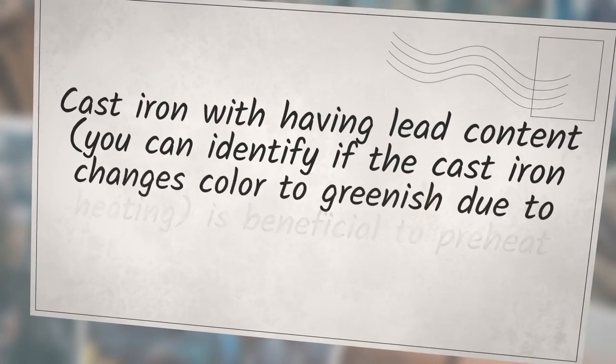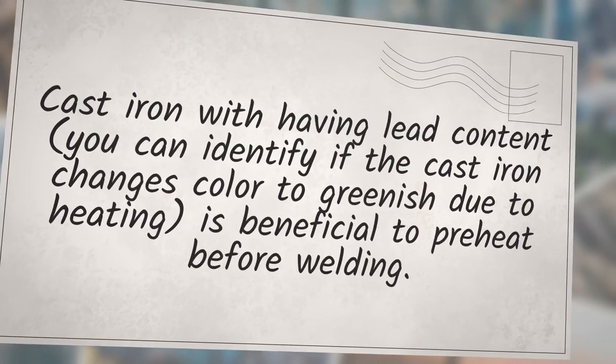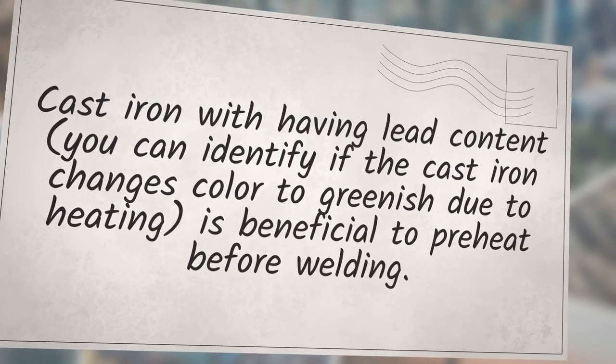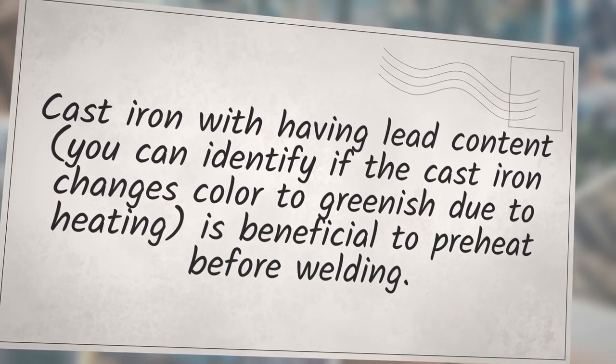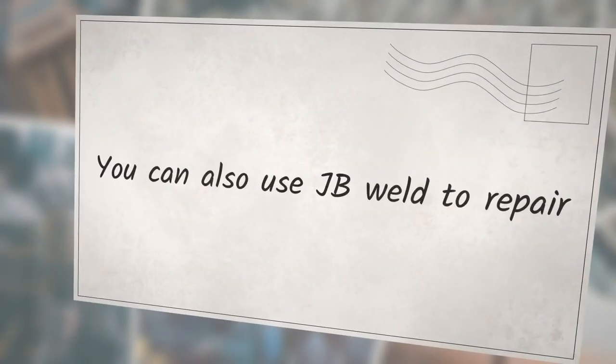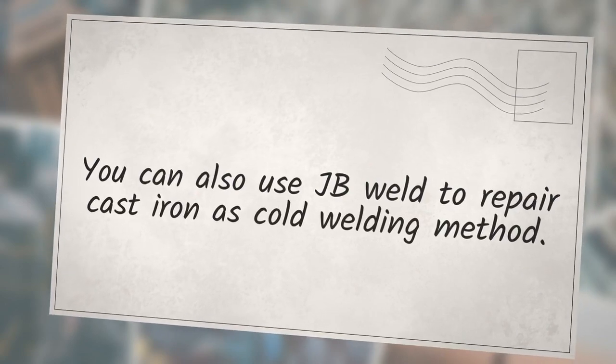Cast iron with lead content can be identified if the cast iron changes color to greenish due to heating. It is beneficial to preheat before welding. You can also use JB Weld to repair cast iron in this cold welding method.